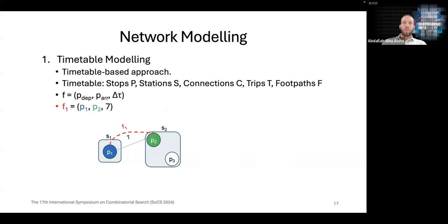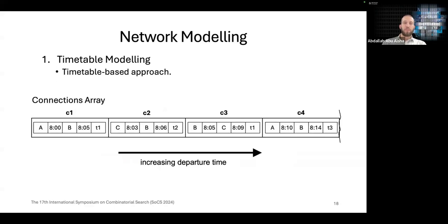And finally we have footpaths F and footpaths are used to model walking transfers between stops. In this example we have footpath F1 from stop P1 to stop P2 with a cost of seven minutes. We can combine all connections into one connections array and we sort the connections by increasing departure time.